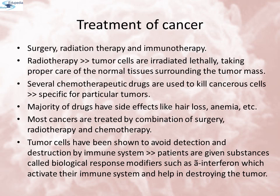The common approaches for the treatment of cancer are surgery, radiation therapy, and immunotherapy. In radiotherapy, tumor cells are irradiated lethally, taking proper care of the normal tissue surrounding the tumor mass. Several chemotherapeutic drugs are used to kill cancerous cells; some of these are specific for particular tumors. Majority of the drugs have side effects like hair loss and anemia. Most cancers are treated by a combination of surgery, radiotherapy, and chemotherapy. Tumor cells have been shown to avoid detection and destruction by the immune system. Therefore, patients are given substances called biological response modifiers, such as alpha interferon, which activate the immune system and help in destroying the tumors.